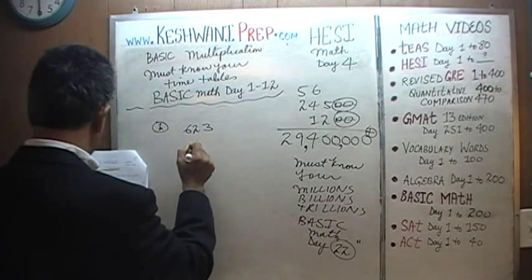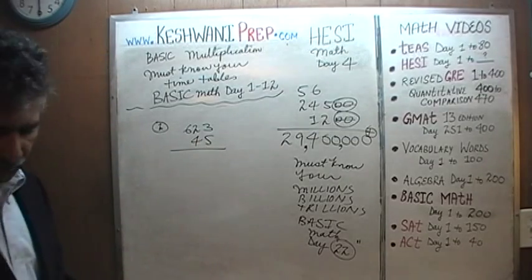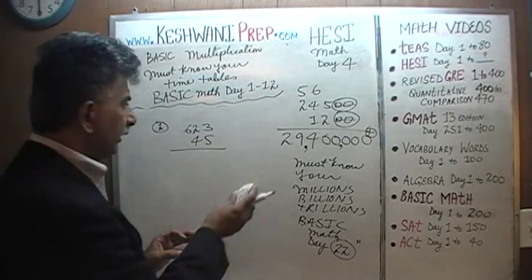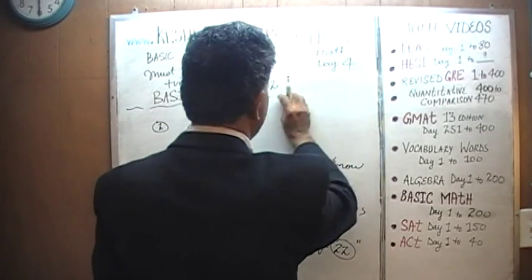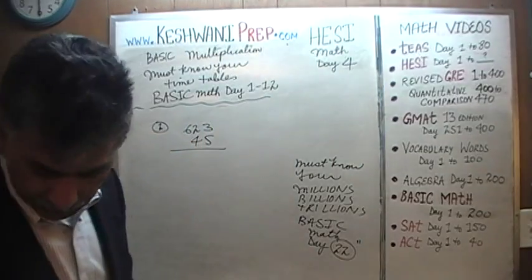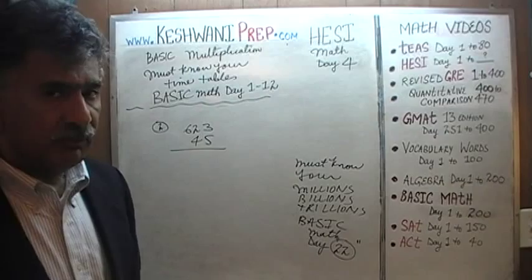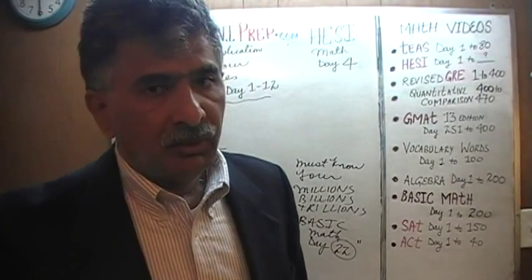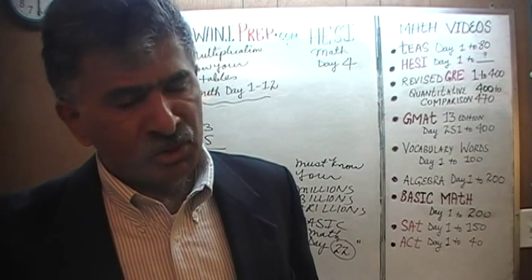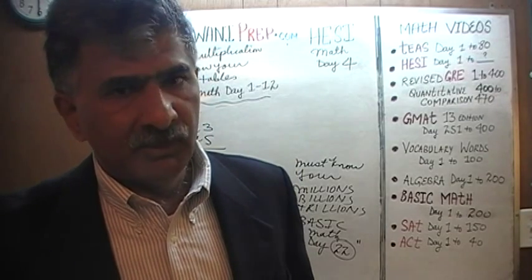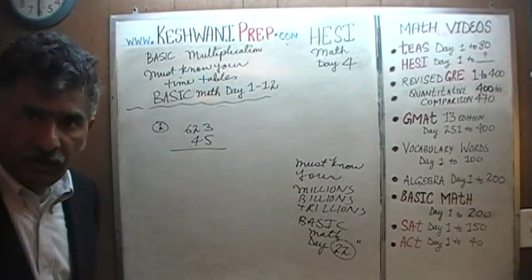Six hundred and twenty-three times forty-five. Before we do our work, let's estimate it — this is the estimation approach from yesterday's work. It's always a good idea to have some estimation in your mind. You can save yourself a great deal of time if you can simply recognize which of the four answer choices comes closest to your estimate. You don't actually have to work out the entire problem every single time.